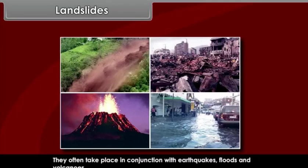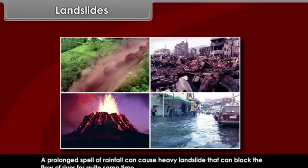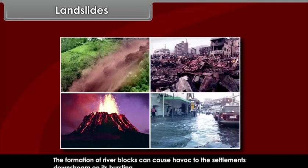Landslides. Landslides are defined as the mass movement of rock, debris, or earth down a slope. They often take place in conjunction with earthquakes, floods, and volcanoes. A prolonged spell of rainfall can cause heavy landslide that can block the flow of river for quite some time. The formation of river blocks can cause havoc to the settlements downstream on its bursting.